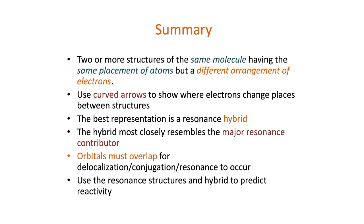So in summary, resonance or delocalization describes two or more structures of the same molecule having the same placement of atoms, but a different arrangement of electrons. We use curved arrows to show where those electrons change place between structures, but the best representation is a resonance hybrid. The hybrid most closely resembles the major resonance contributor, and we saw how to rank those resonance contributors. Orbitals must overlap for delocalization, conjugation, or resonance to occur. We can use the resonance structures and the hybrid to predict reactivity.